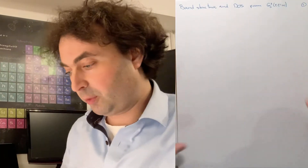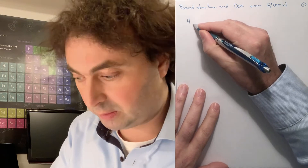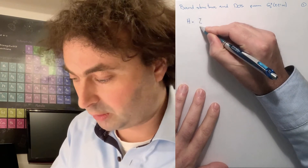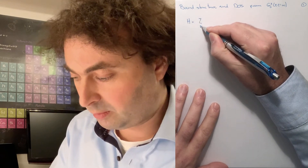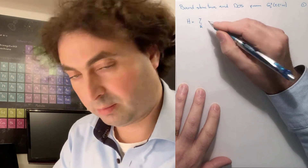Welcome to our next lecture in the series on condensed matter theory. In this lecture I want to talk about the band structure and densities of states and how we can obtain them from the Green's functions of our system. For that we'll have a look at a Hamiltonian, which can be very general, of a lattice model, where we can sum over all points in the Brillouin zone.